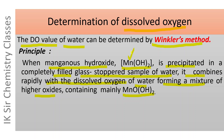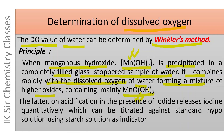When Mn(OH)₂ is precipitated in a completely filled, glass-stoppered sample of water, Mn(OH)₂ combines immediately with the dissolved oxygen of water, forming a mixture of higher oxides which consists mainly of MnOOH₂, known as basic manganic oxide. This basic manganic oxide, on acidification in the presence of iodide ion, releases iodine quantitatively, which can be titrated against a standard hypo solution using starch solution as indicator.